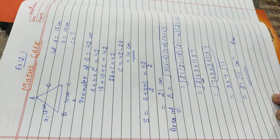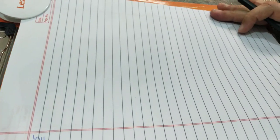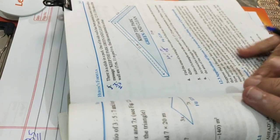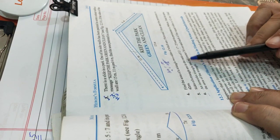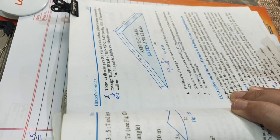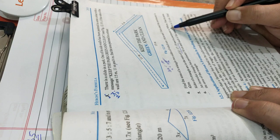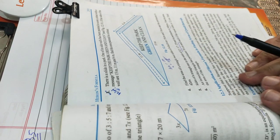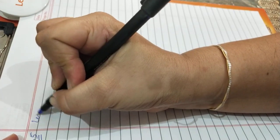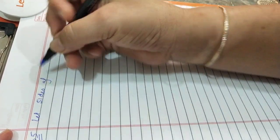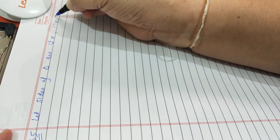So this question is complete. Now come to the next question — question number 5. The sides of a triangle are in the ratio 12 : 17 : 25, and its perimeter is 540 centimeter. Find its area.